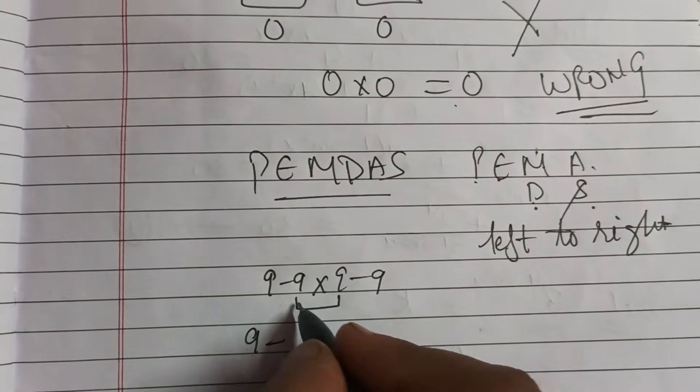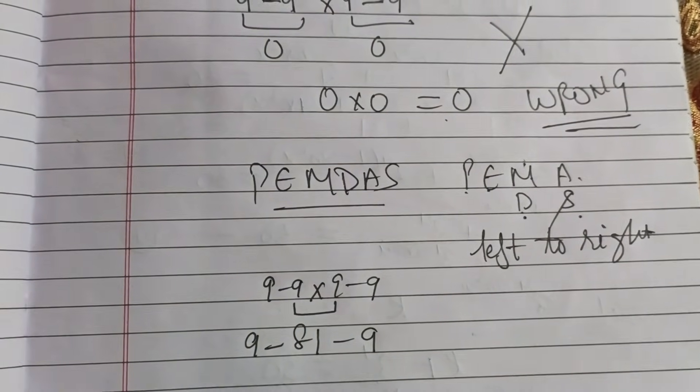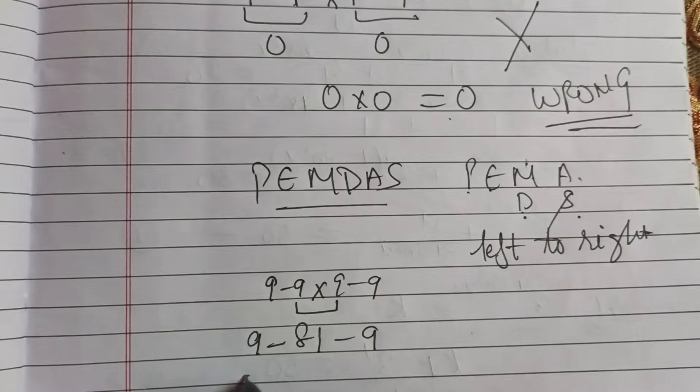So, 9 minus 9 times 9 is 81, minus 9. Now we will solve from front. 9 minus 81 is minus 72.